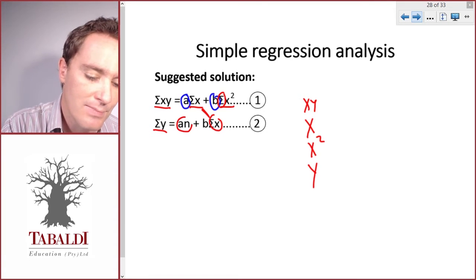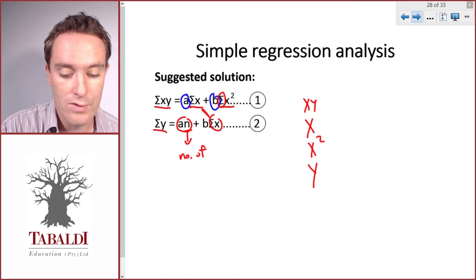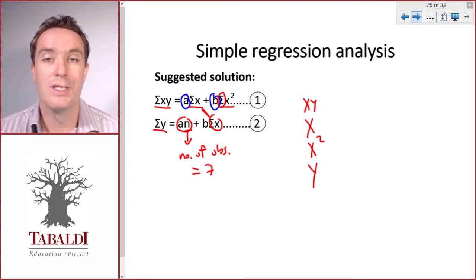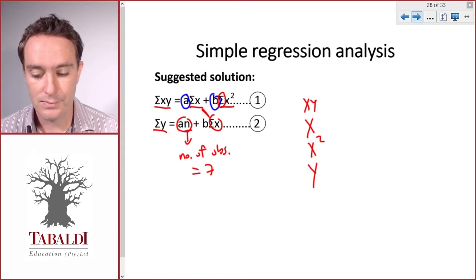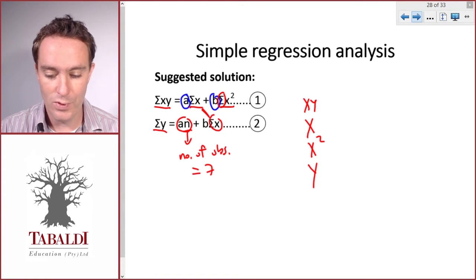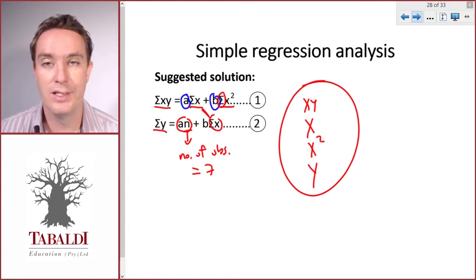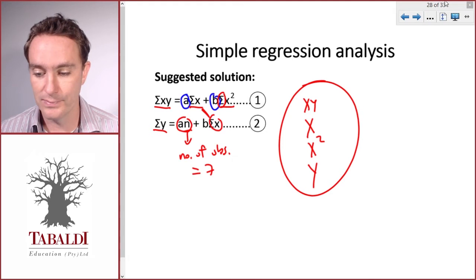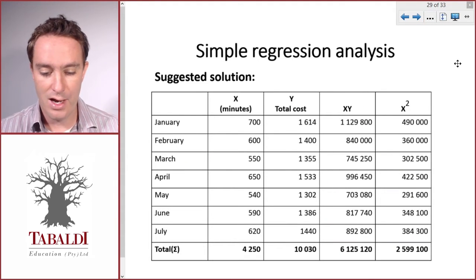So there's basically four things: the sum of xy, the sum of x, the sum of x squared, and then the sum of y. And then there's this n. That's just the number of observations, which in our example is seven. There's seven months. Now let's see if we can find this information from our telephone bill.